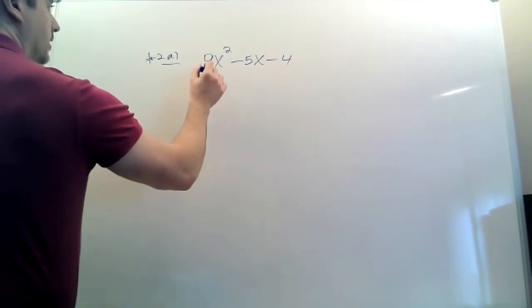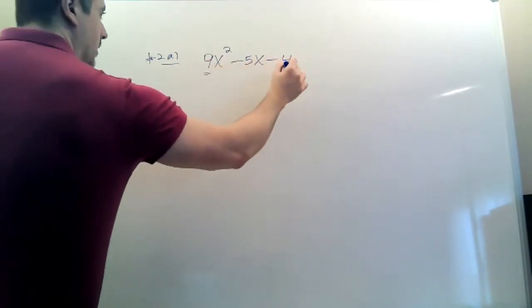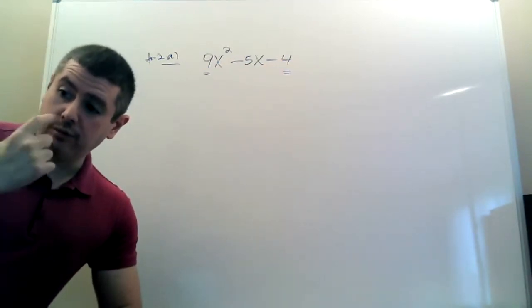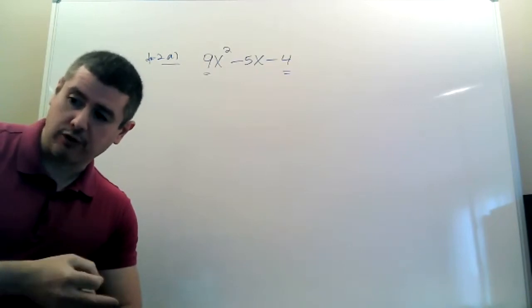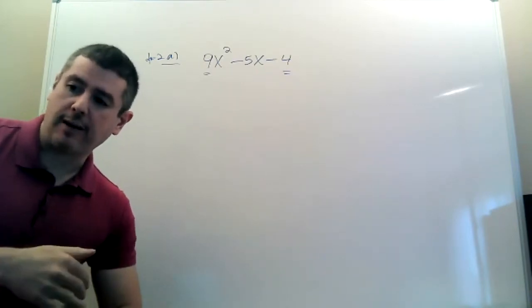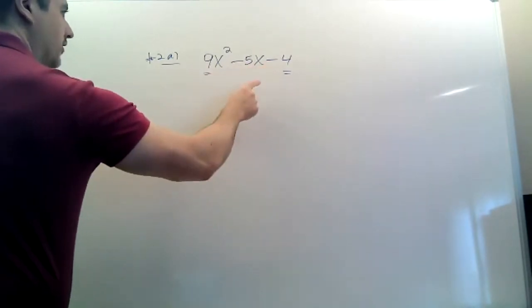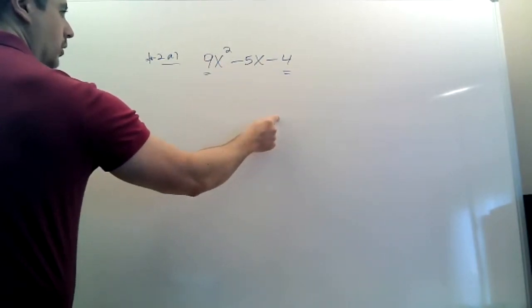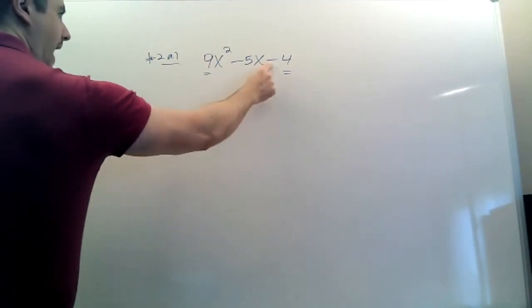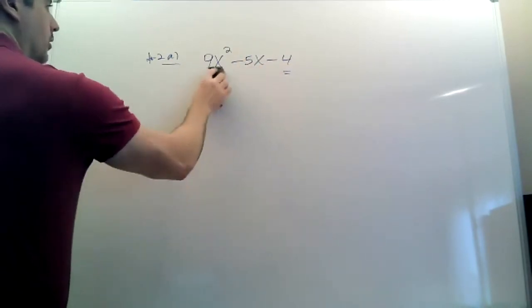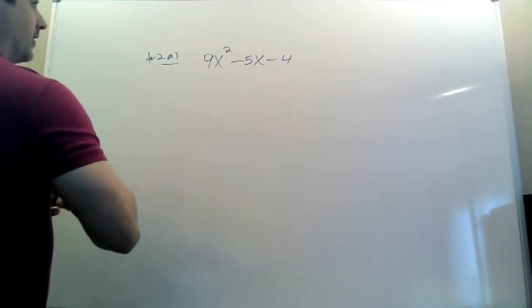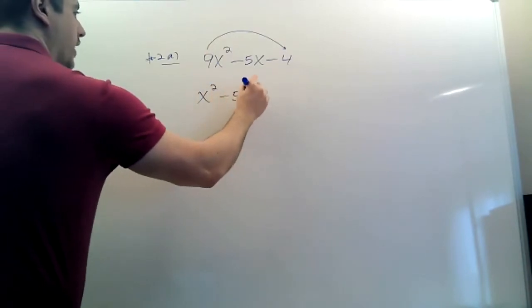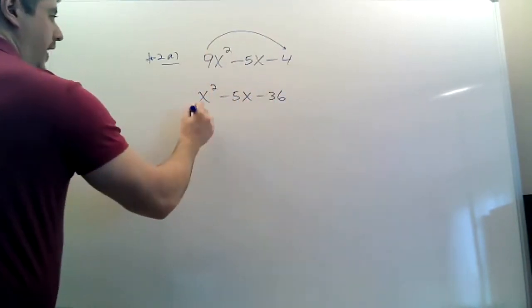Question 2a from the practice: before starting, this looks like a perfect square, but remember type 4 — perfect square — is never grouped with type 5 or type 6. Type 5 will be alone. How do you know this isn't a perfect square? The sign is negative. A perfect square is something times itself, which always gives a positive result, so you can't get a negative 4. Even though it looks like type 4, it's type 5. The first step is to multiply the 9 over to the 4: 9 times 4 is 36. Then factor it.